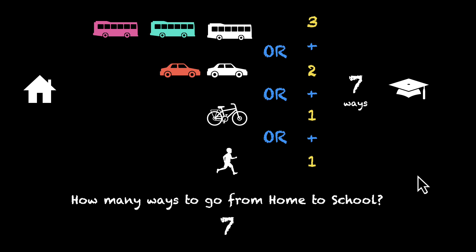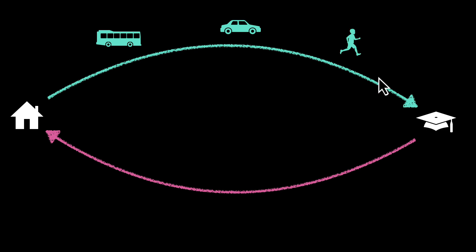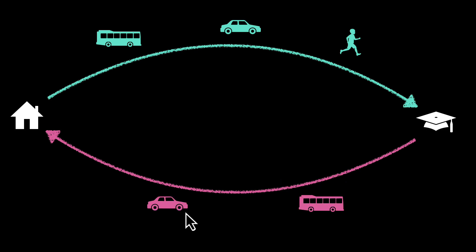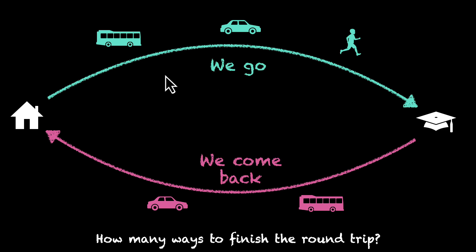But you don't want to stay at school — you want to come back home. So in the next scenario, you also come back. When going to school, you can take the bus, the car, or walk. But when coming back, you're too tired to walk, so there are only two options: you can take the bus or the car. How many total ways to finish the round trip? If you thought the answer is five, think again. The correct answer is six — there are six ways to finish this job.